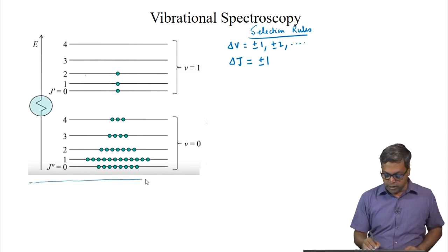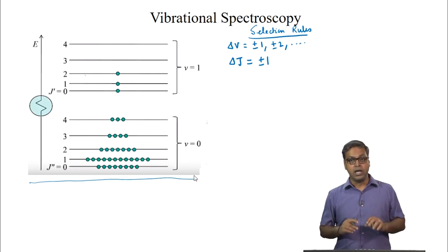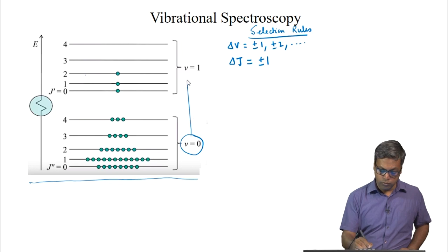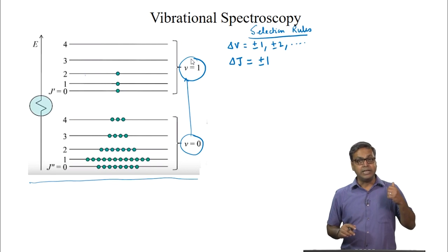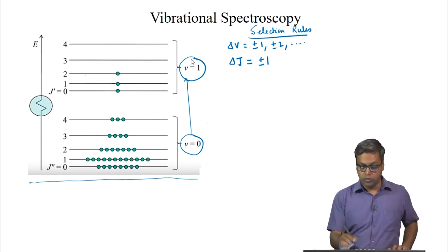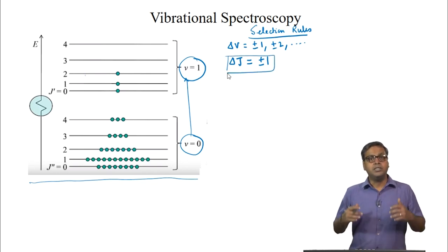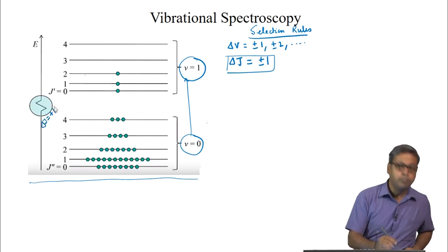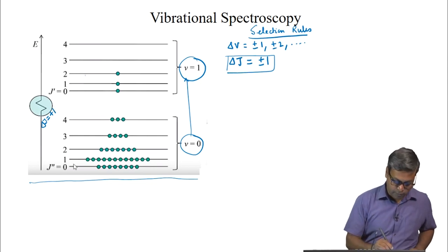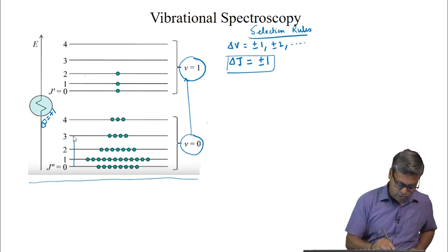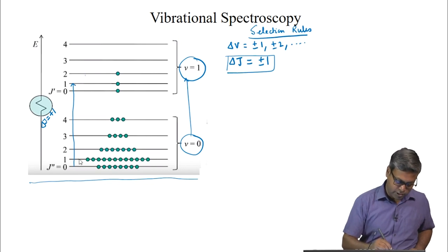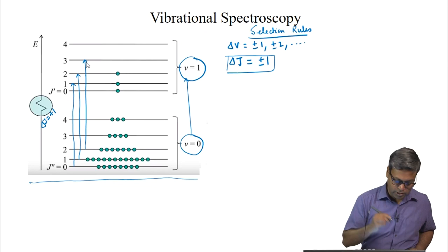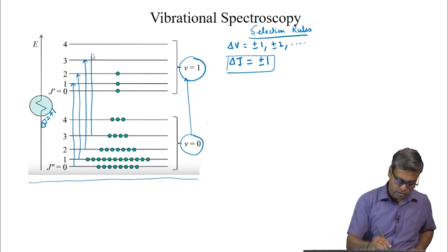These are the expanded forms of the ro-vibrational energy levels. We will focus only on the fundamental band, in which we excite molecules from V=0 to V=1. Since delta J must equal ±1, we can get transitions where delta J = +1: from V=0, J=0 to V=1, J=1; from J=1 to J=2; from J=2 to J=3; and from J=3 to J=4.